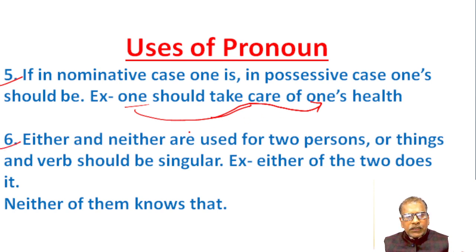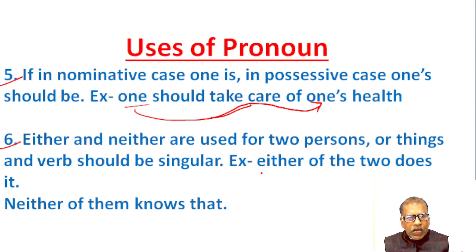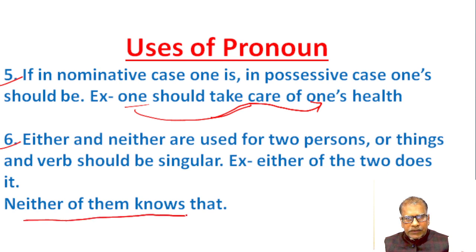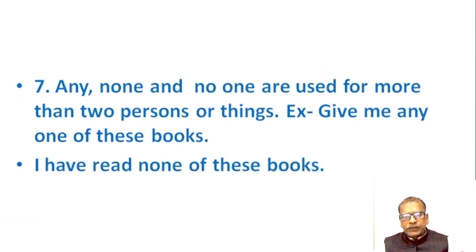Either and neither are used for only two persons or things, and the verb should be singular. 'Either of two' — either is used only for two persons or things. Example sentence with 'neither': 'Neither of them knows.' Just like either, neither is followed by only two, not more than two. Any, none, and no one are used for more than two persons or things.